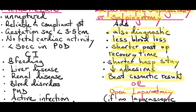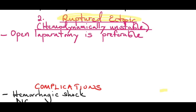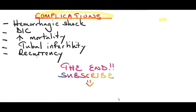Where there is no expertise for laparoscopy, you can do open laparotomy. In a ruptured ectopic pregnancy in a hemodynamically unstable patient, open laparotomy is preferred because it is quicker and life-saving. Complications of ectopic pregnancy include hemorrhagic shock, disseminated intravascular coagulation, and increased risk of mortality. Long-term complications include tubal infertility and recurrence of ectopic pregnancy. This concludes our discussion on ectopic pregnancy. Please don't forget to subscribe. Thank you.